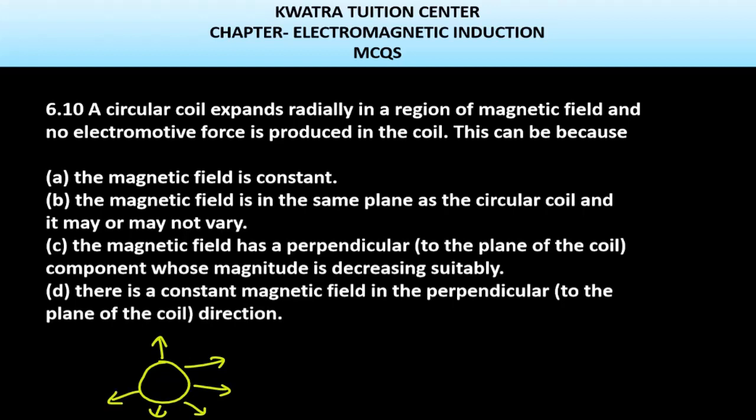So you can see and think of it like this: we have a circular coil and it is expanding in the region of magnetic field and no electromotive force is produced. That means e is equal to 0. So what do you understand from here? We have a lot of arrangements when we have e = 0.